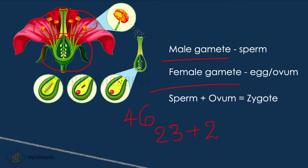The male gamete and female gamete each have only half the number of chromosomes. For example, in humans there are 46 chromosomes — 23 from the mother and 23 from the father, meaning 23 from the egg and 23 from the sperm. In most animals, male and female gametes are present in separate individuals, like in humans and reptiles — they are known as unisexual organisms. But in some animals, like earthworms, both male and female gametes are present in the same individual; they are known as bisexual organisms.